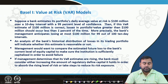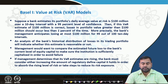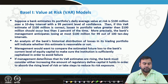For example, a bank estimates its portfolio daily average value at 100 million dollars over a 10-day interval with 99% confidence. If this VAR estimate is correct, losses greater than 100 million dollars should occur less than 1% of the time. More precisely, management anticipates losses exceeding 100 million for only 1 out of 100 ten-day intervals. This is an analysis of the bank's historical distribution of losses in its trading portfolio.